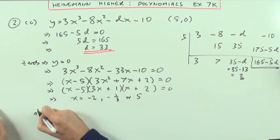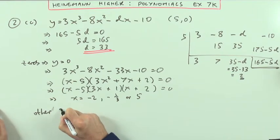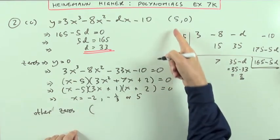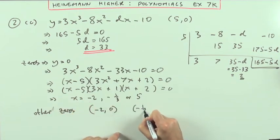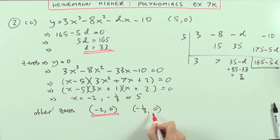So the other zeros will be, we've got the 5, 0 already, so it must be the negative 2, 0 and the negative one third, 0. There, that at last is the answer to question 2.